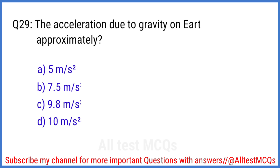Q29. The acceleration due to gravity on Earth is approximately? The right answer is option C. 9.8 meters per second squared.